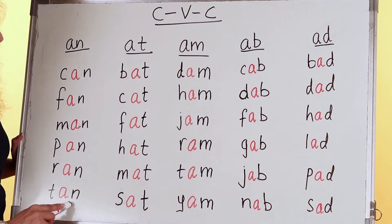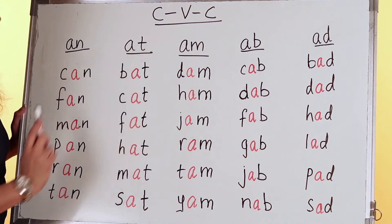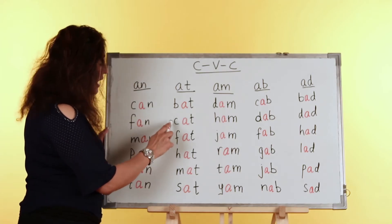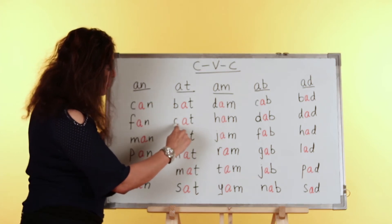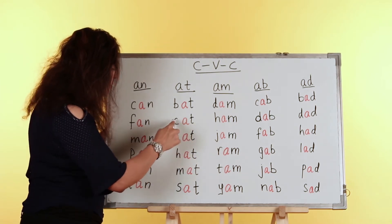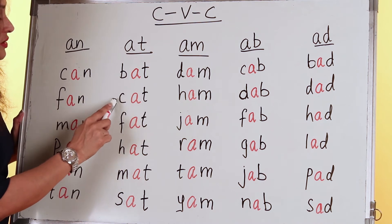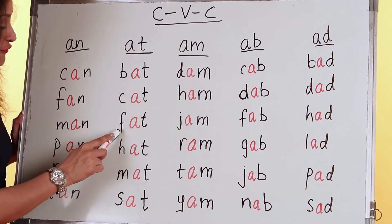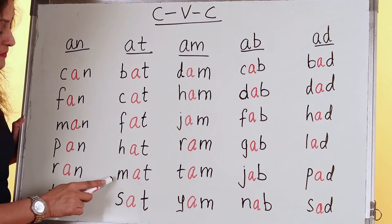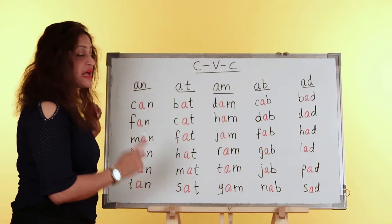Then we have TAN. The next word family is AT. The first one in the AT family is BAT. Notice that I'm holding each letter sound to the next so that it's easy to blend them together. Instead of going 'k-at,' you can go 'k...at — cat.' That will help you read the word more easily. So we have CAT, FAT, HAT, MAT, and SAT.